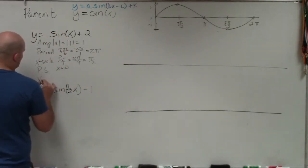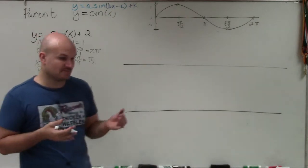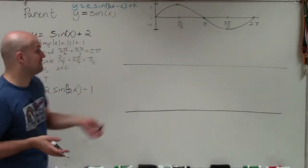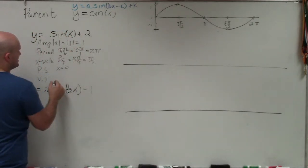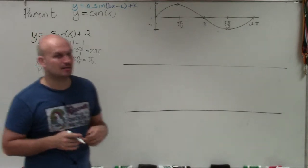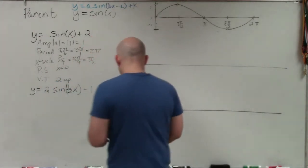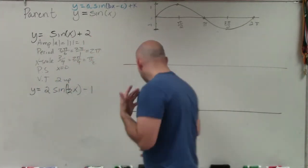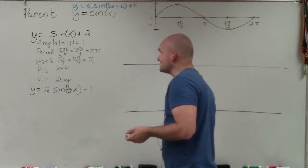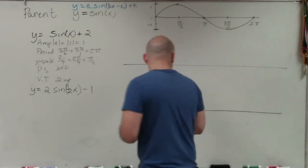The last thing is my vertical transformation, which is k. Is the graph going to be shifting up or down? You can see this one has a vertical transformation of 2, which means we're going to be shifting our graph two units up. So let's go ahead and draw the y-axis and then determine where our first point is going to be.